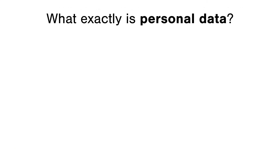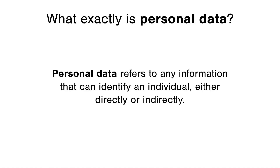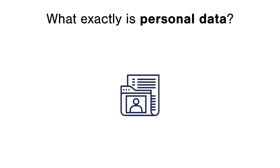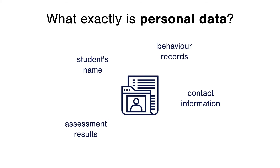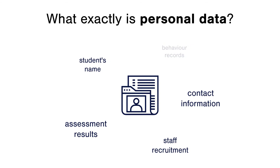But what exactly do we mean by personal data? Personal data refers to any information that can identify an individual either directly or indirectly. In a school setting this could include details like a student's name, contact information, behaviour records, assessment results, or even staff recruitment information and more.